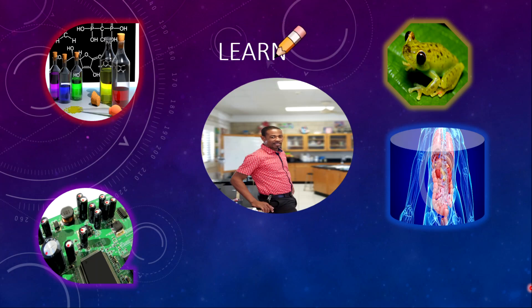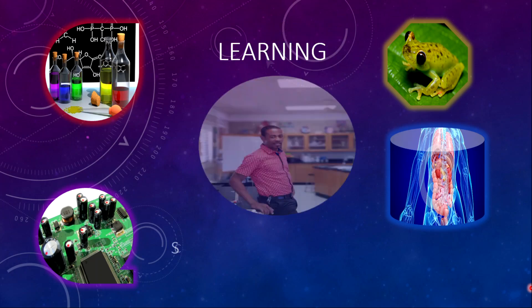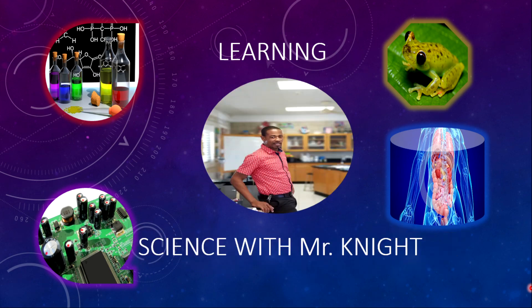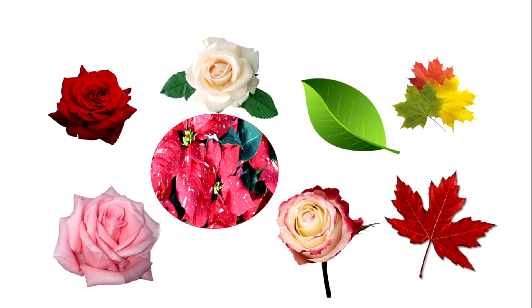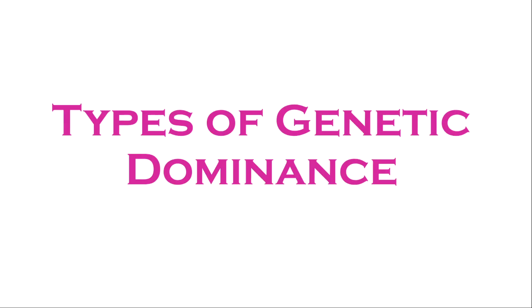Welcome back to another learning series with Mr. Knight. When you look at organisms, you will realize that there are certain traits that are more prominent than others. Over time you may notice new traits are being developed. These developments of new traits may be noticeable in animals and also in plants. Today, we are going to explain all of this by looking at the types of genetic dominance.